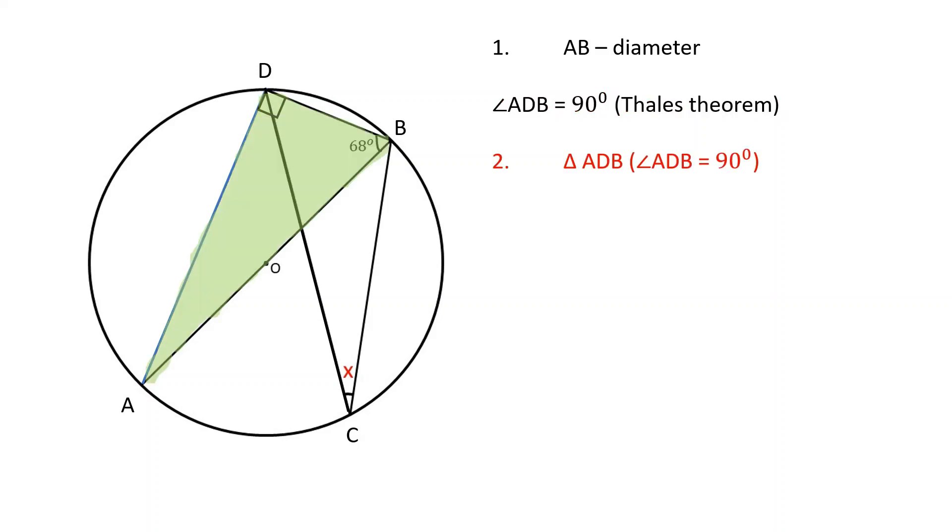Since ADB is a right triangle, angle DAB is equal to 90 minus 68, which is 22 degrees, because the sum of the two acute angles of a right triangle is equal to 90 degrees.